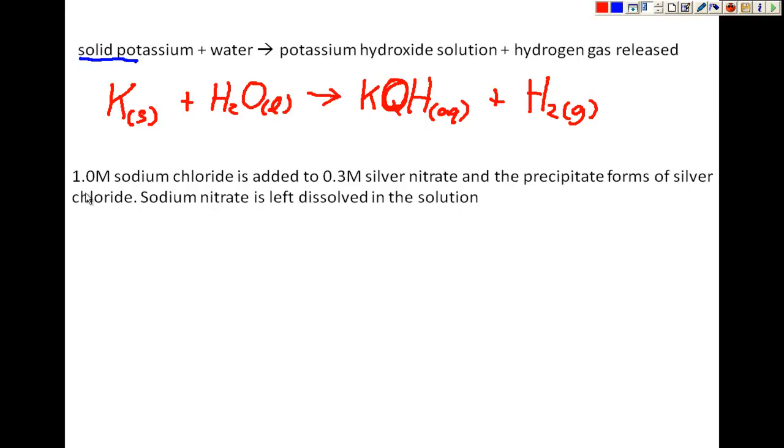Here's another question. We have 1.0 molar sodium chloride is added to 0.3 molar silver nitrate, and a precipitate forms of silver chloride. Sodium nitrate is left dissolved in the solution. So what we're going to do is, since it is 1.0 molar, or 1 mole per liter, having this kind of number indicates that it's dissolved in water. So it's going to be NaCl aqueous, because it's dissolved in water, and it's going to be added to silver nitrate aqueous. So AgNO3 aqueous.